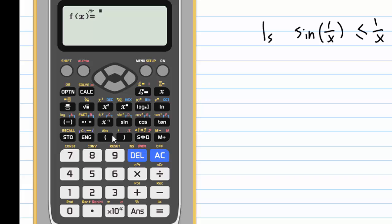I'm going to enter sin(1/x), sine of 1, come down, and alpha x, then close the bracket, and then equal.